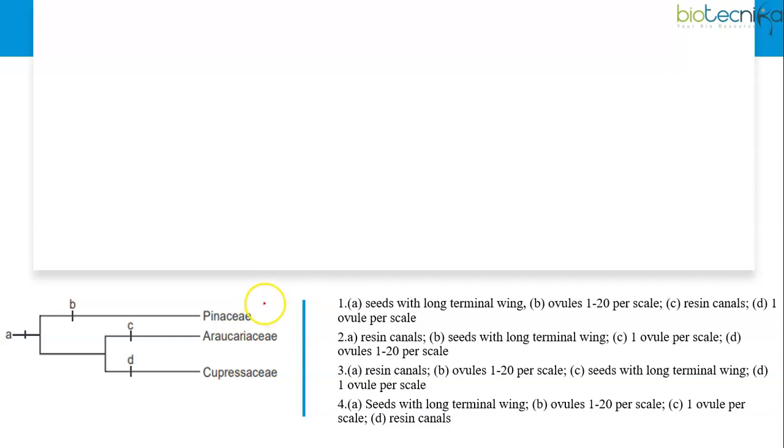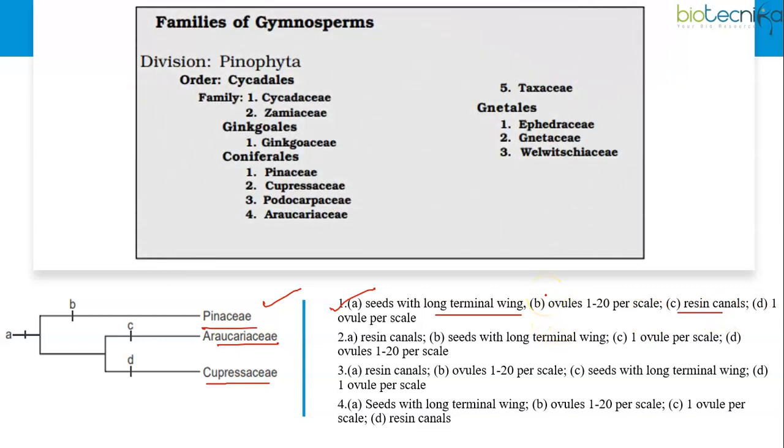As given in the question, this cladogram is about the families Pinaceae, Araucariaceae and Cupressaceae. And we have to identify the synapomorphy, the derived character state in common with two or more taxa. These are the synapomorphies mentioned that whether the seeds have long terminal wing and ovules are 1 to 20 per scale or 1 ovule per scale or is it resin canals. To answer this question, you need to be familiar with the gymnosperms.